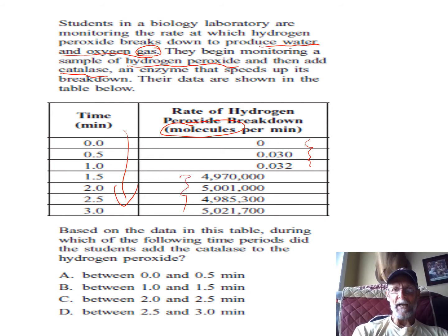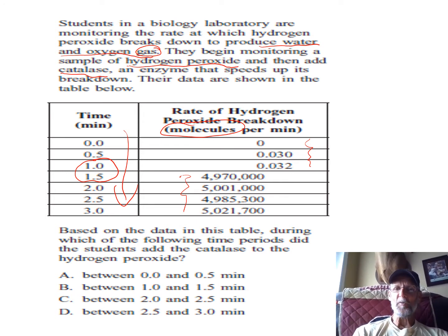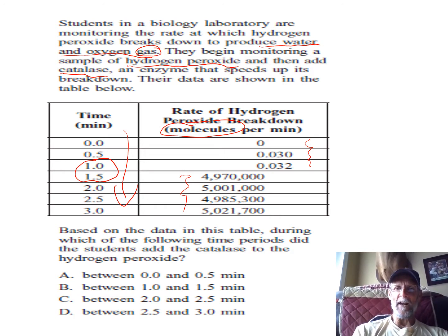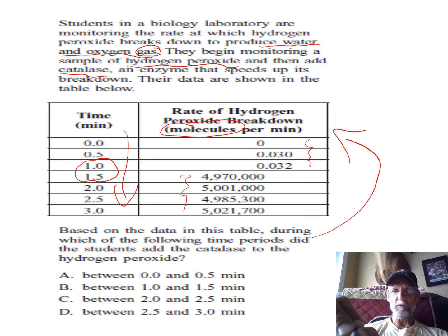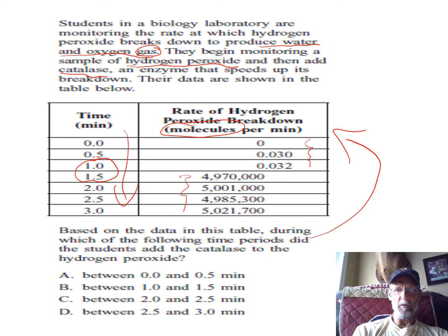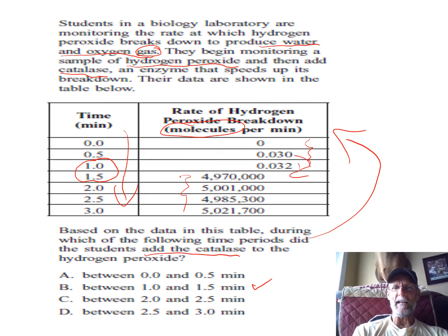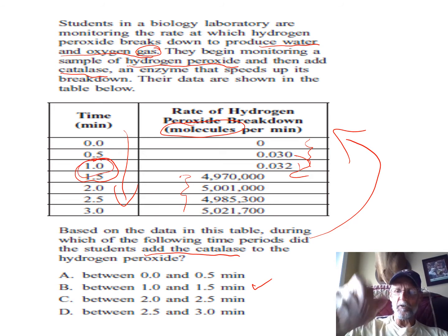That big change occurred between minute one and then at 1.5, and that's what they asked you. When you get a question like this, go straight to the question, read it first, then go back and read the info knowing what they're asking. The correct answer is that this table clearly shows that catalase was added between these two time periods — that enzyme which so greatly speeds up the reaction was added between minute one and minute 1.5.